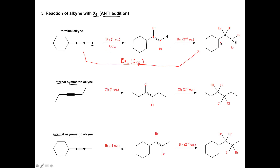This was written stepwise to help explain the reaction, but on a test we'll see either one equivalent or two equivalents written. For the internal symmetric alkyne, we're adding two chlorines with anti-addition. With one equivalent we break one pi bond, so one pi bond is gone and we still get an alkene. When we add the second equivalent, we do that reaction across the alkene, so there's only a sigma bond left. We've now added four chlorines. This would typically be written as Cl2 with two equivalents, going straight from our alkyne to the halogenated product.